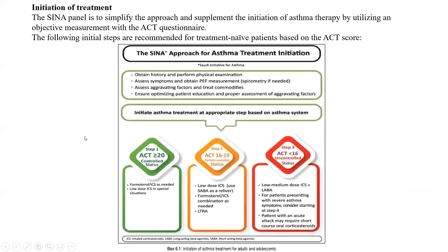Patients with asthma often underestimate the presence of symptoms and tend to assume their asthma is controlled even when it is not. Therefore, the ACT was developed. For a patient with an ACT score of 20 and above, we treat with formoterol - a long-acting beta agonist - combined with inhaled corticosteroid therapy on an as-needed basis.